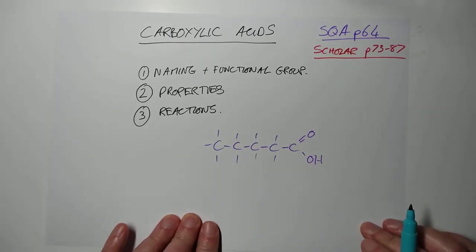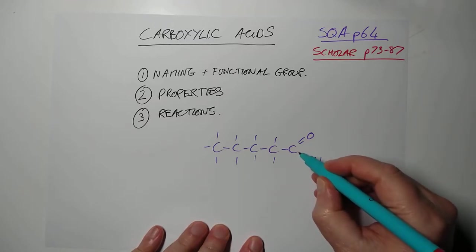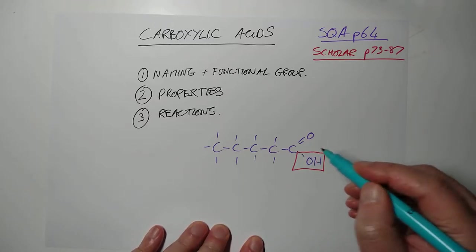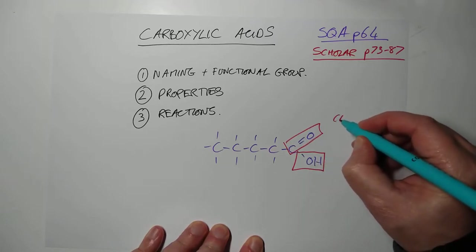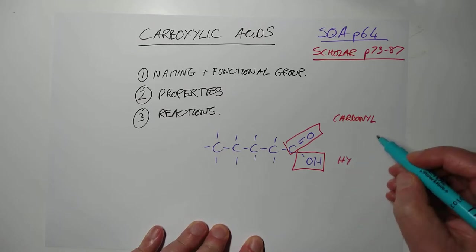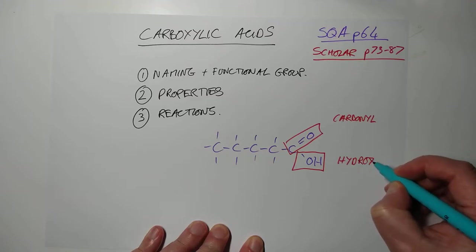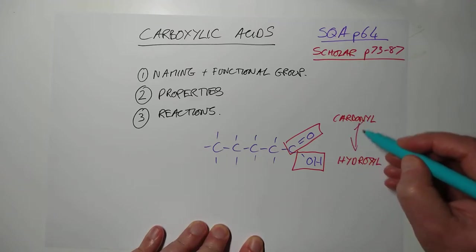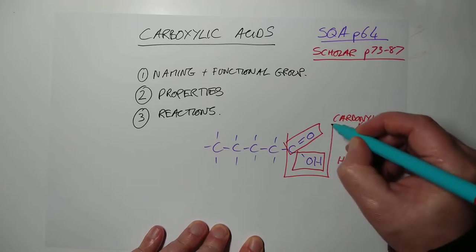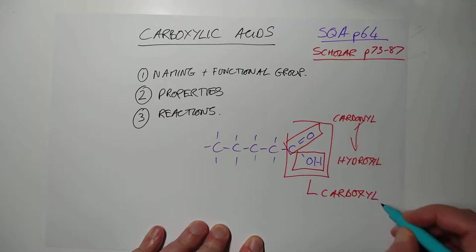So this is a nice straight chain carboxylic acid. You can see the functional group at the end. The functional group is a combination, in fact, of two functional groups: the hydroxyl and the carbonyl. So when you put carbonyl and hydroxyl together, you get carboxylic acids. Which is the carboxyl group.